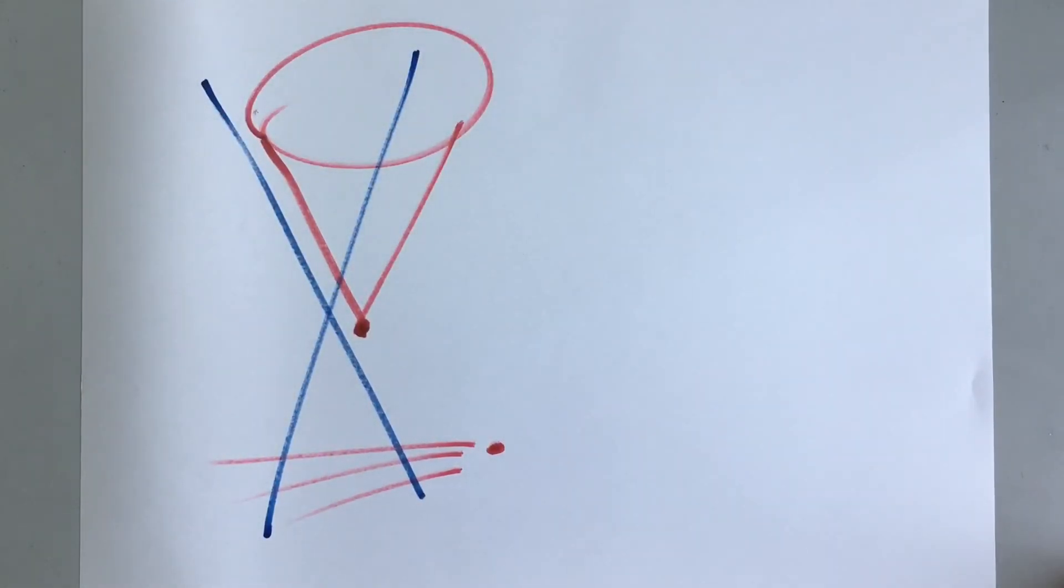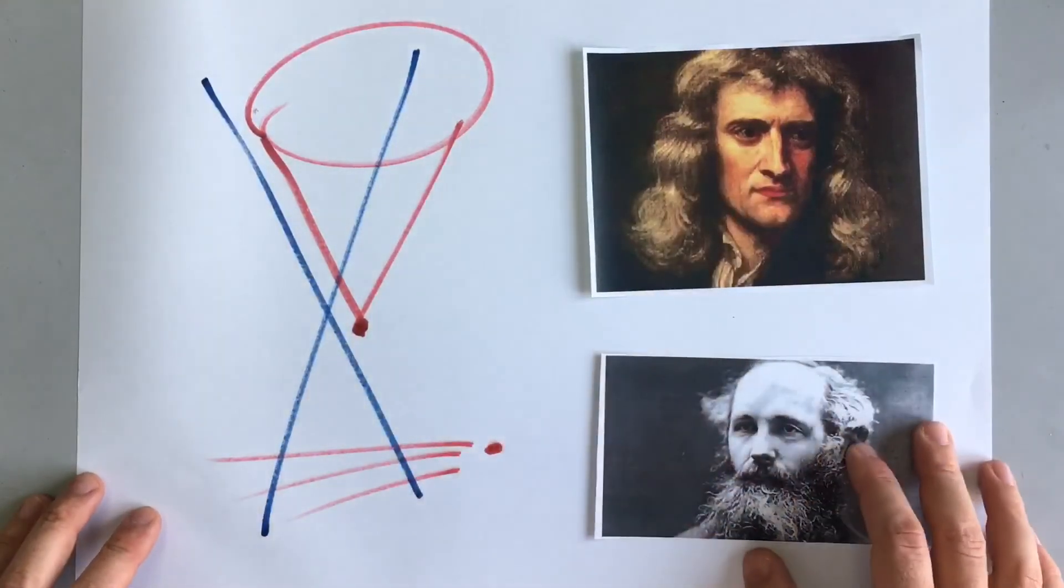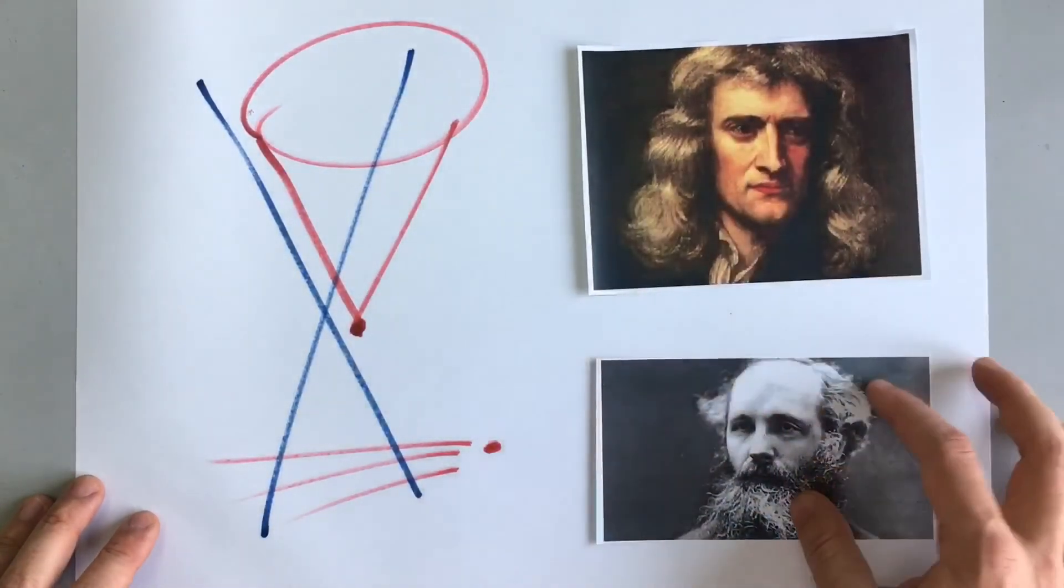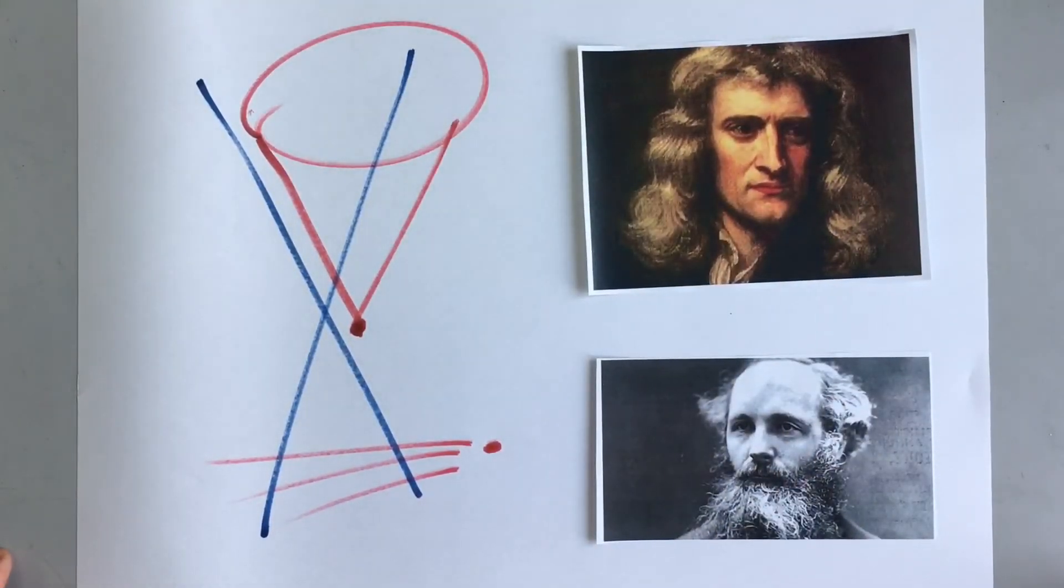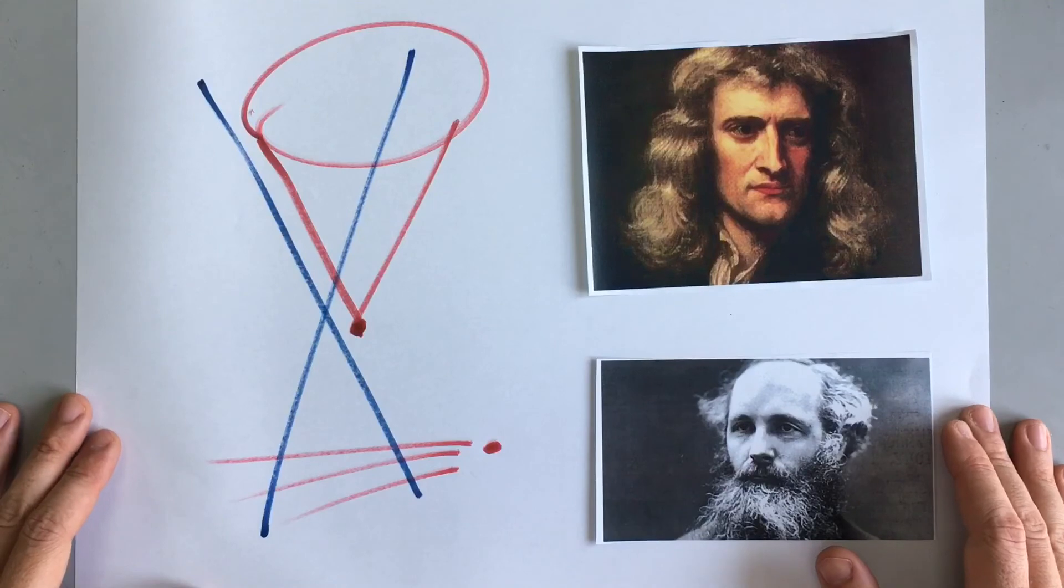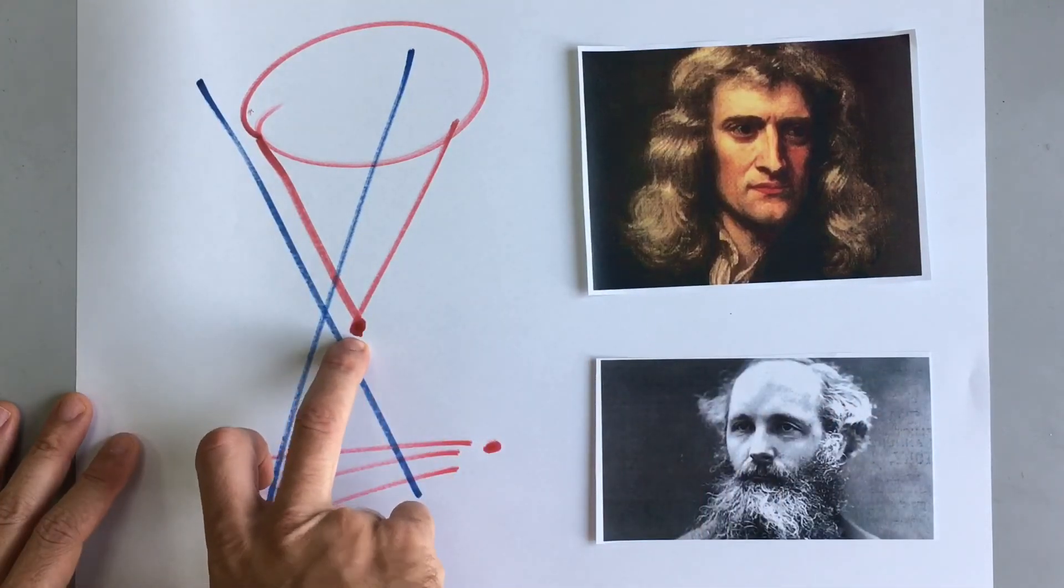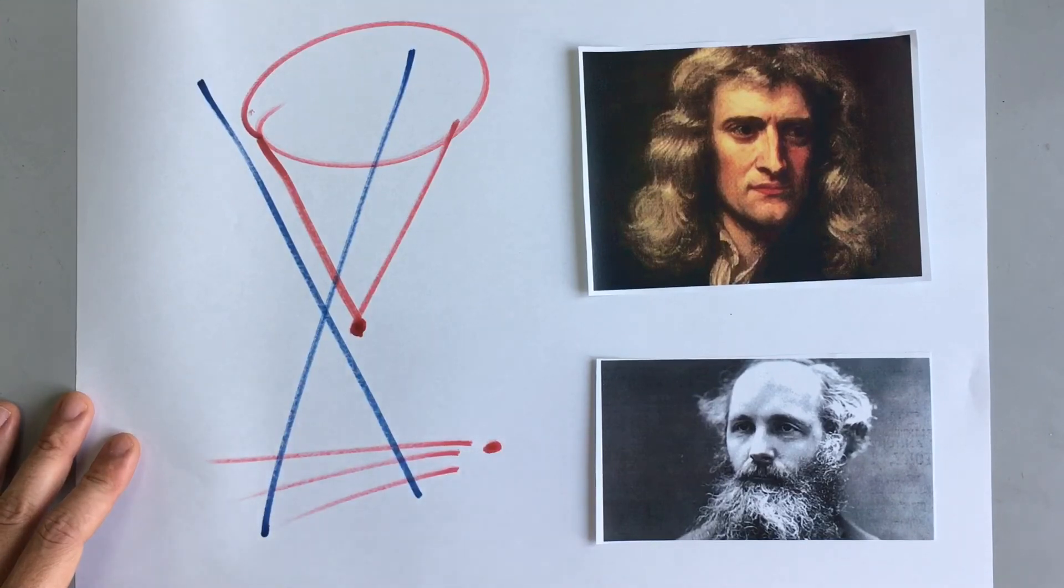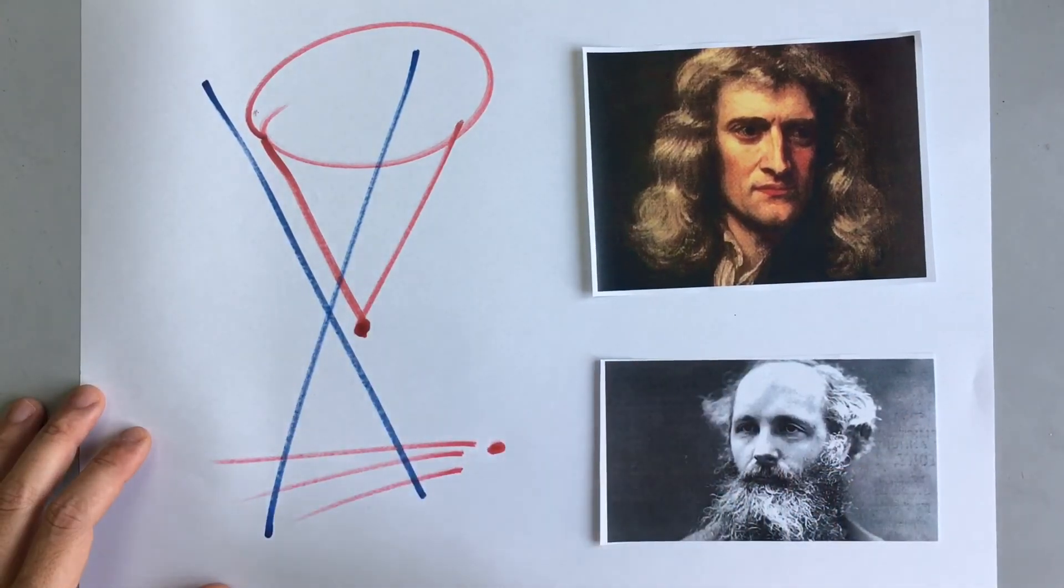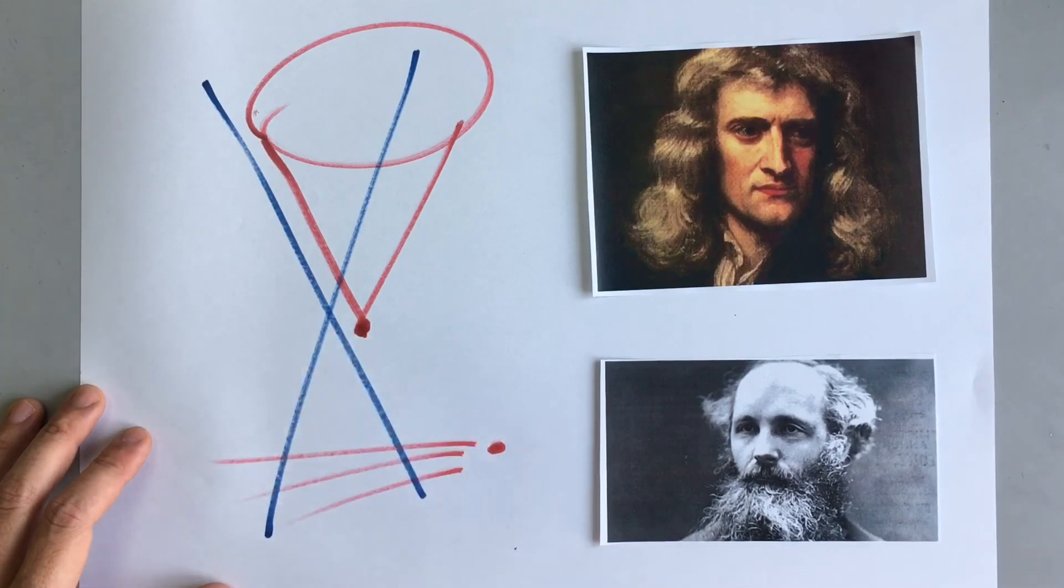This represented an enormous change, a massive paradigm shift from the time and the thoughts of Newton and Maxwell. And that enormous change is the start of modern physics. Modern physics is focusing on the very small and the very fast to try and understand what rules govern the behavior of those things.